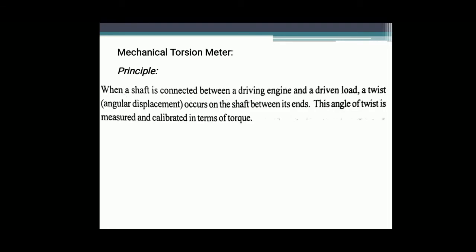We will see the first instrument: Mechanical Torsion Meter. The principle is: when a shaft is connected between a driving engine and a driven load, a twist — that is, angular displacement — occurs on the shaft between its two ends. This angle of twist is measured and calibrated in terms of torque.